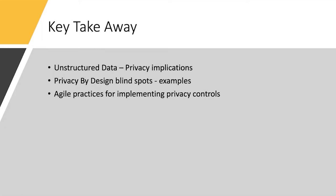Let's quickly jump in. The key takeaways I'm expecting our audience to benefit from: we will talk about a lot of unstructured data and the privacy implications around it. We will also talk about privacy by design blind spots, and I will give a number of examples of how these areas are often missed when coming up with a data governance framework. We'll also cover agile practices for implementing privacy controls.